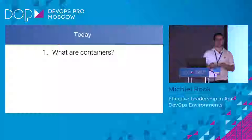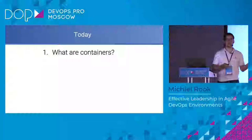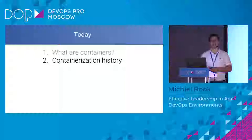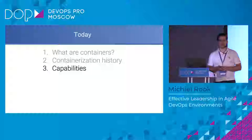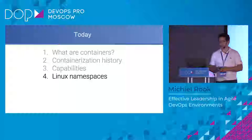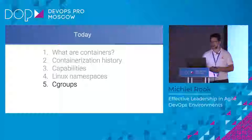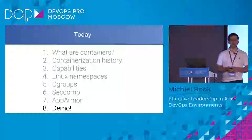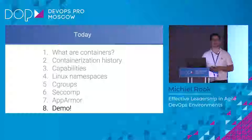So what are we going to talk about today? First, what are containers? When we talk about Docker, Kubernetes, Mesos, we often talk about containers, but very few people actually explain what containers are. We'll go over a little bit of containerization history, then I'll explain why I said this is a Russian project. We'll talk about Linux capabilities, Linux namespaces, cgroups, seccomp, and AppArmor. And in the end, I have a little demo. The source code is on GitHub, so you can try it out yourself if you're feeling brave.